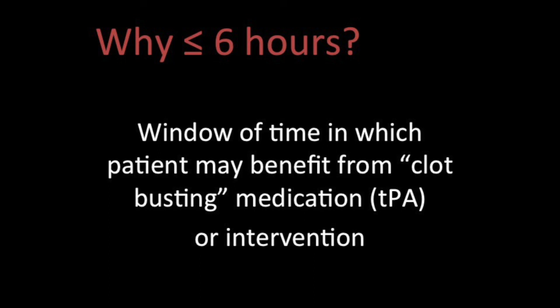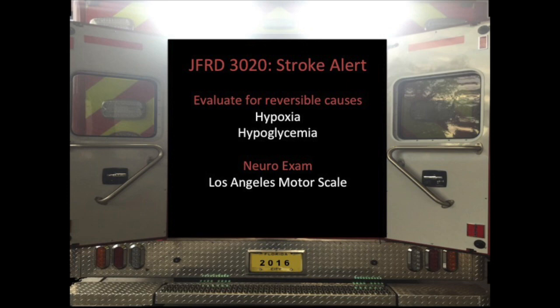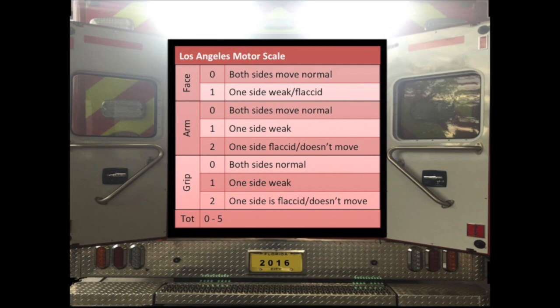Depending on the hospital you go to, we can also do intervention — snaking a wire up through the groin or neck, like with a cardiac cath, going up in the brain to either pull a clot out or stent something, using a little vacuum. Depending on the hospital, that window can go up to 12 and even 24 hours. It all depends on where they go — your SOGs tell you where to take the patient based on your Los Angeles Motor Scale exam. Evaluate for reversible causes like hypoxia and hypoglycemia, then take them to the appropriate center.